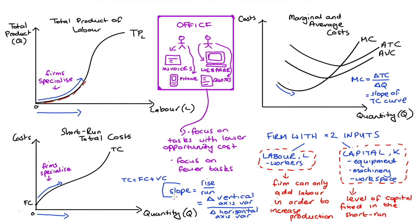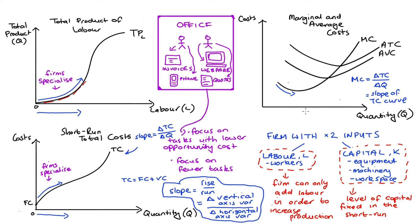So the slope of our total cost curve is change in total costs over change in quantity, which is just our marginal cost. Looking at the slope of the total cost function in this initial section, you can see it's getting flatter — decreasing in value — and so does our marginal cost curve, which is declining in this region.